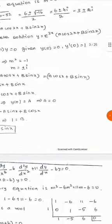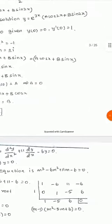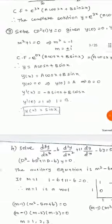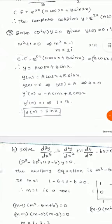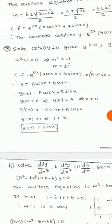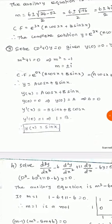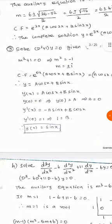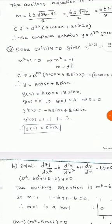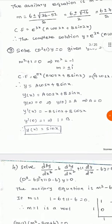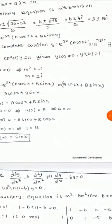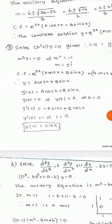That is y(x) = a·cos(x) + b·sin(x). Applying the initial condition y(0) = 0, we substitute x = 0: y(0) = a·cos(0) + b·sin(0) = a·1 + b·0 = a. Since y(0) = 0, we get a = 0.